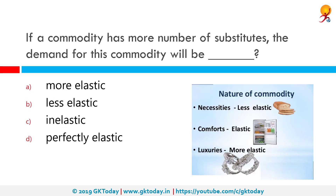If a commodity has more number of substitutes, the demand for that commodity will be more elastic. More the number of substitutes, more elastic a commodity is, which is why luxuries are more elastic. If the commodity has no substitute, the demand would be somewhat inelastic.